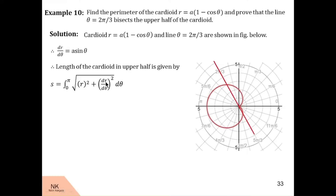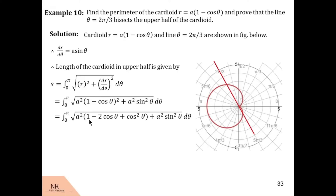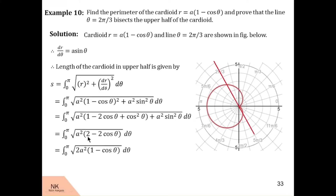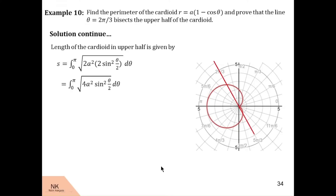Now let us substitute values of r and dr by d theta. r is a into 1 minus cos theta and dr by d theta is a sin theta. This a square and a square is common. We can take it out of the under root, and 1 minus cos theta square can be written as 1 minus 2 cos theta plus cos square theta, and sin square theta as it is. So after taking out a square common, we have 1 plus cos square theta plus sin square theta equals 1 again, so 1 plus 1 is 2 minus 2 cos theta. This 2 is also common; we can take it out, so we will be left with 1 minus cos theta which can be written as 2 sin square theta by 2.